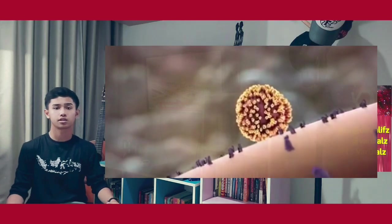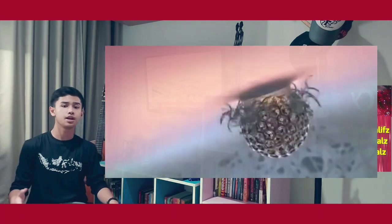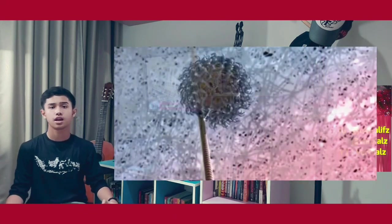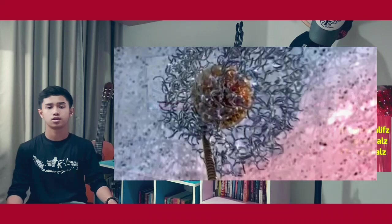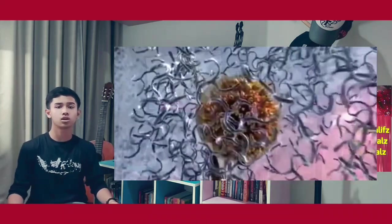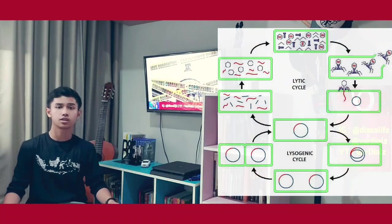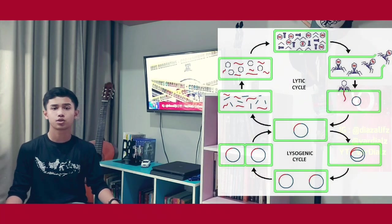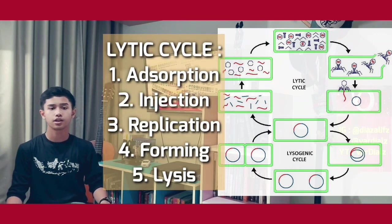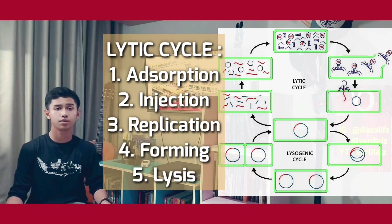The next thing we should know is the virus life cycle. There are two types of cycles: lytic and lysogenic cycles. The lytic cycle occurs if the host cell is weaker than the infection power. The lysogenic cycle occurs if the host cell is stronger than the infection power. A lytic-capable virus is also called a virulent virus. From the lytic cycle, there are stages: adsorption, injection, replication, forming, and lysis.